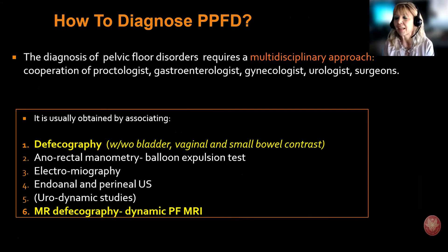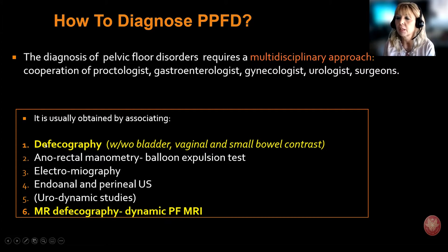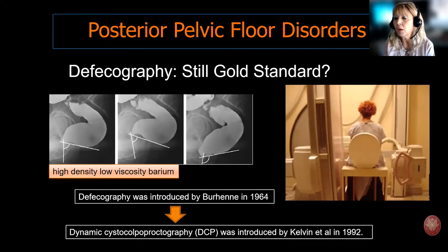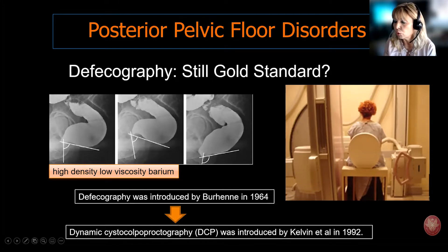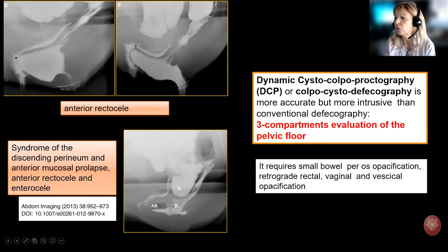The diagnosis of pelvic floor disorders is clearly very difficult, and requires cooperation of different physicians. It is usually obtained by associating clinical and radiological tests. The two most important tests are conventional X-ray defecography and MR defecography, recently introduced. Conventional X-ray defecography has been considered the gold standard for several years. Introduced in the 1960s, it was the gold standard for over 50 years. It was optimized in the 1990s as the so-called colpocystodefecography, where all three compartments of the pelvic floor are opacified and evaluated.